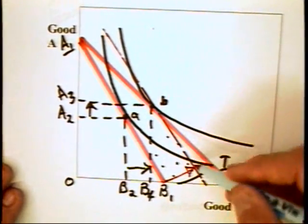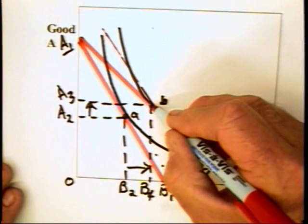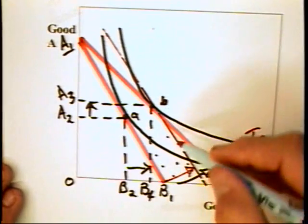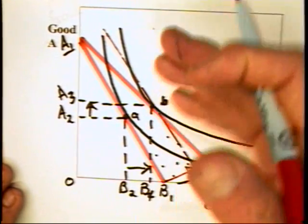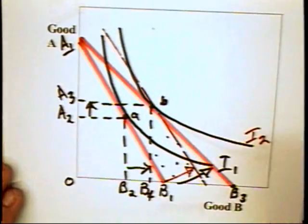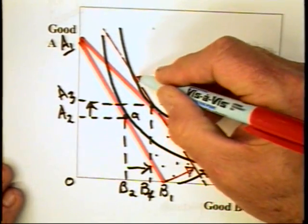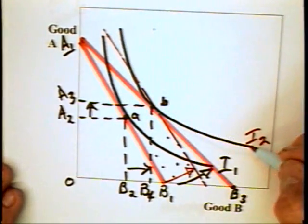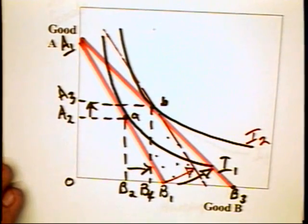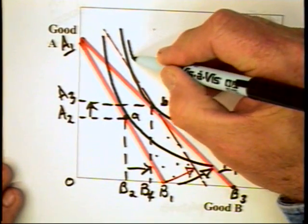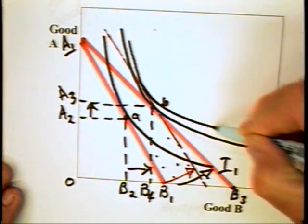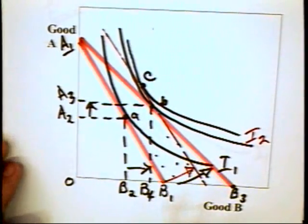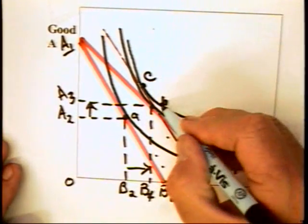Notice that the new income subsidy causes the budget line to move here. Notice that this new budget constraint must cut the indifference curve I2 at point B. The reason is that the slope of the budget constraint is now greater than the slope of the indifference curve. So there's got to be a part of the budget constraint that goes above the indifference curve I2. This means that there's got to be a higher indifference curve that an individual could attain and move to a point like C.